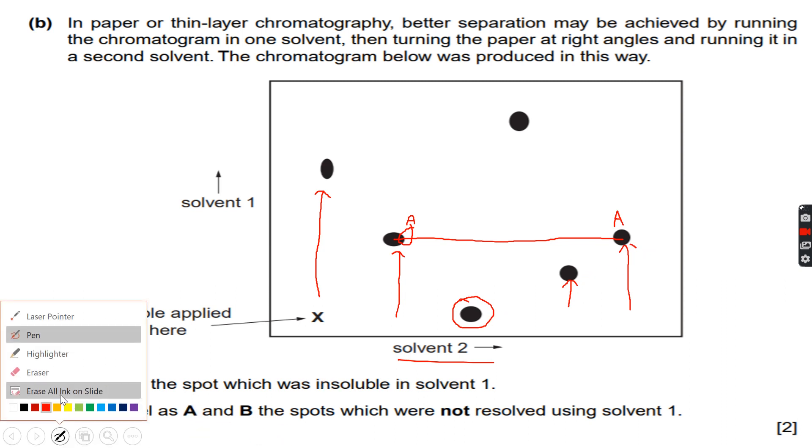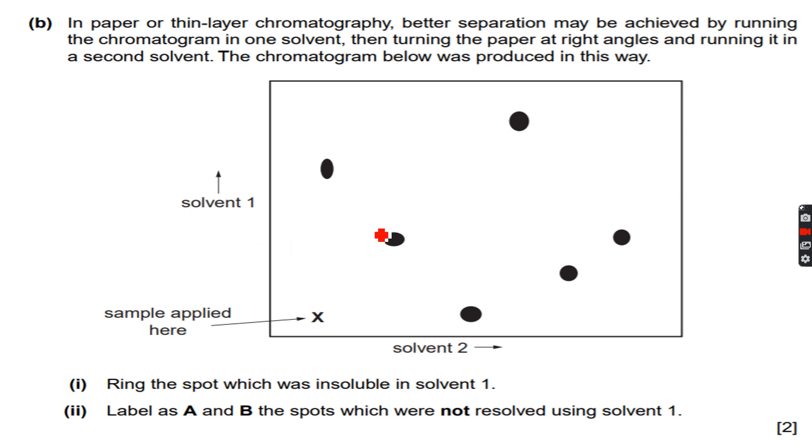So actually, the two solutes that were not resolved using solvent 1 were this one and this one, because until and unless we used solvent 2, both of them would not have gotten the separation. So in solvent 1, both of them were overlapping. So now we are done with this question as well.